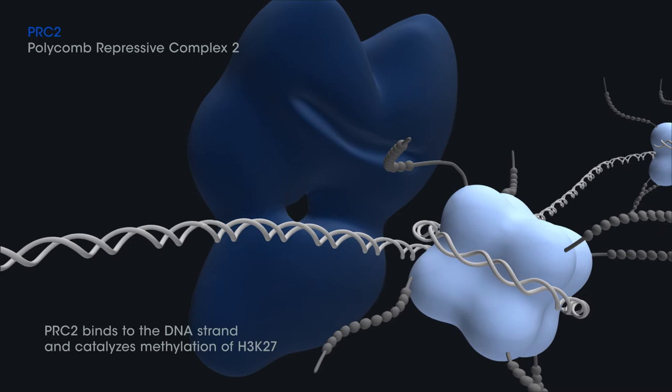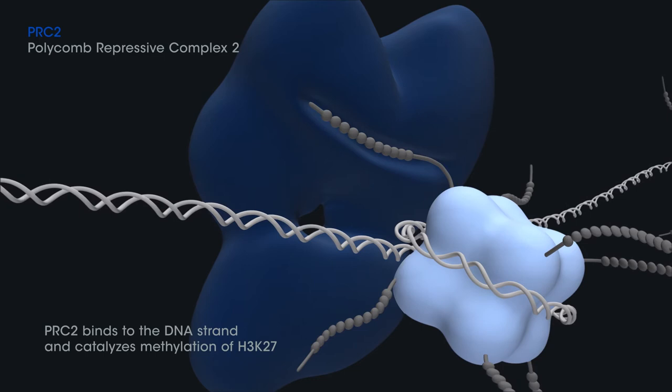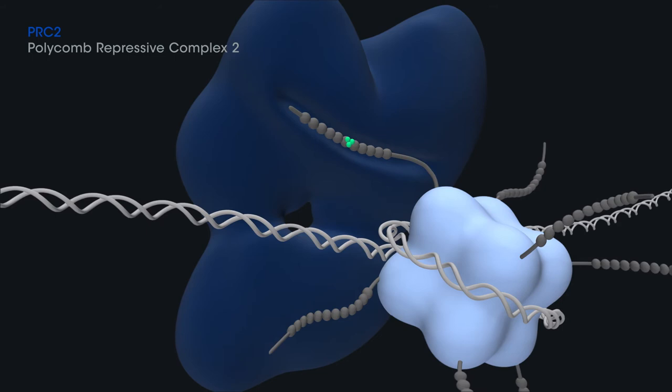PRC2 binds to the DNA strand between nucleosomes and catalyzes mono, di, and trimethylation of H3K27.